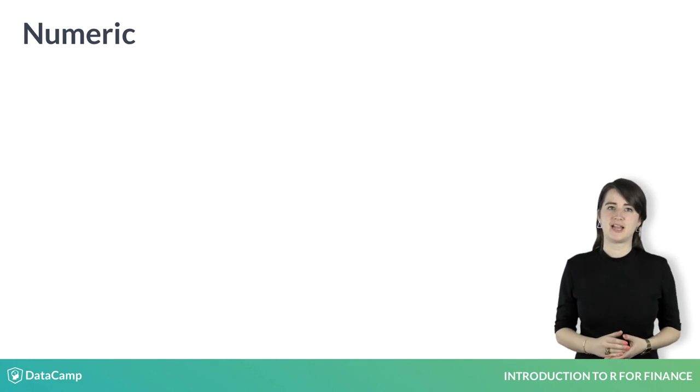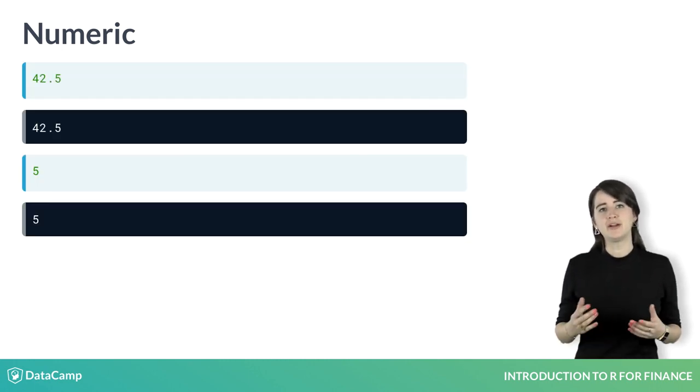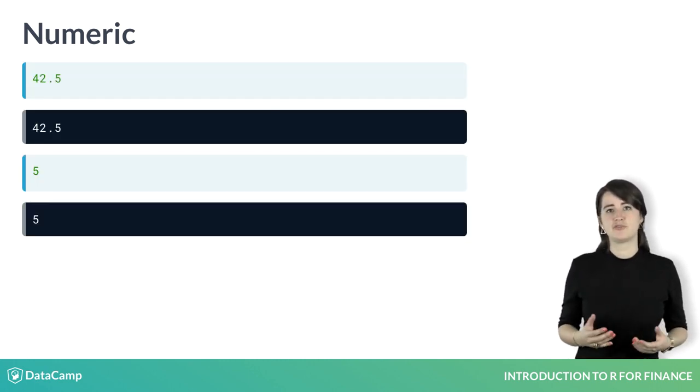Numeric data are decimal numbers like 42.5. Numeric data could be a stock price, cash flow, or income.